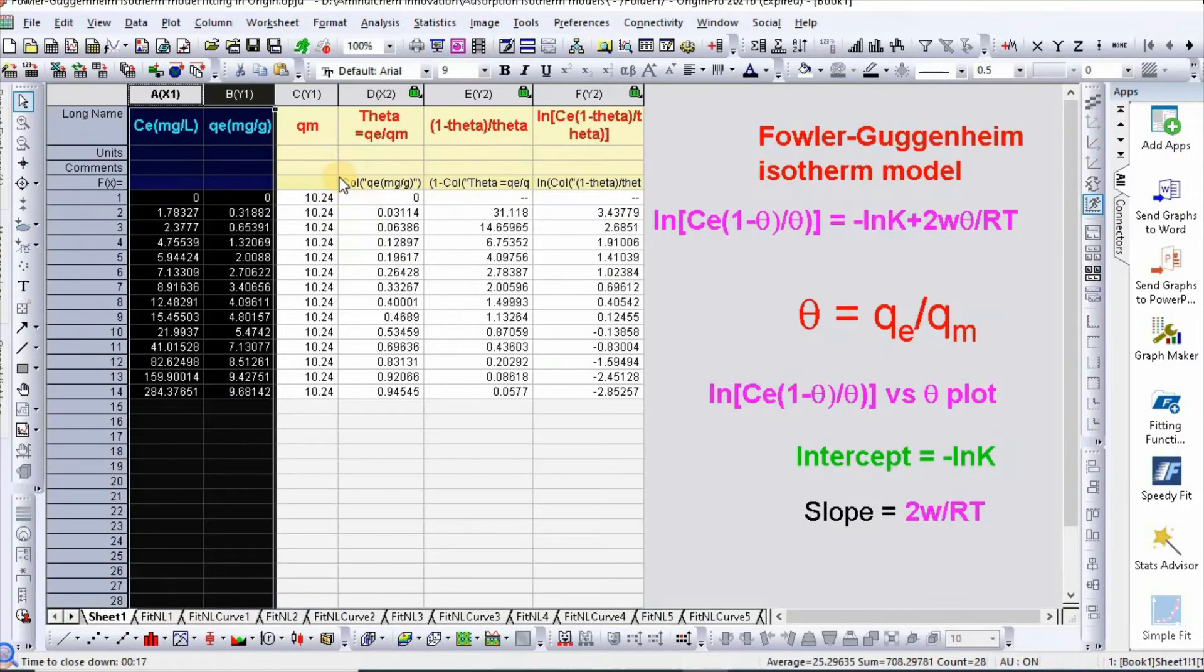So I have written Qm as 10.24. Then you need to calculate theta, which is equal to Qe by Qm.